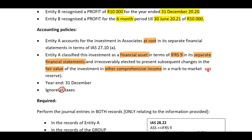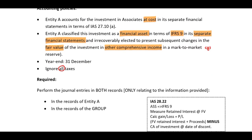Required: Perform the journal entries in both records, only relating to the information provided, in the records of Entity A and then in the records of our group. Now, this is a change in control. Therefore, our first step will be to identify the type of change, and the next step, I prefer to include my timeline to ensure that I understand the scenario.